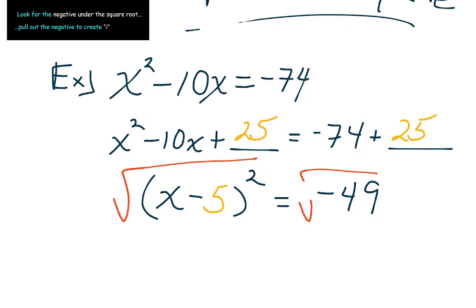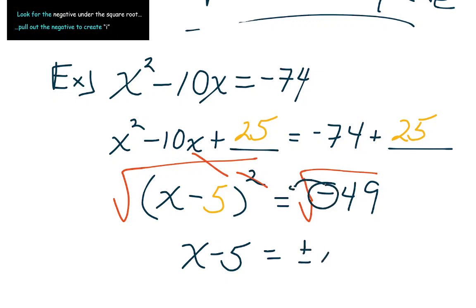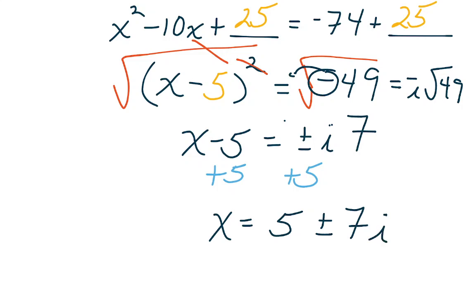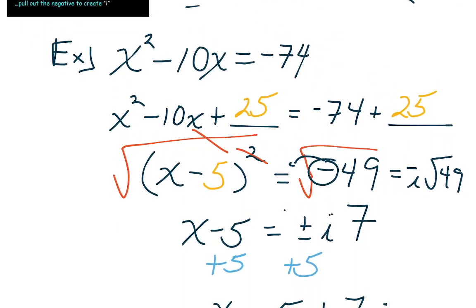We did this so we could still square root both sides. Now I have a single square — that square cancels, leaving just x minus 5. On the other side I take the square root — don't forget plus or minus — the negative pops out as i, leaving i times the square root of 49. The square root of 49 is 7. Then add 5 to both sides, giving the answer 5 plus or minus 7i. Notice I put the 5 first, then plus or minus 7i.